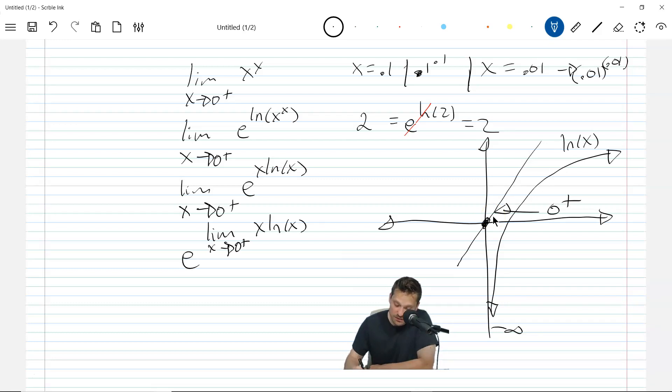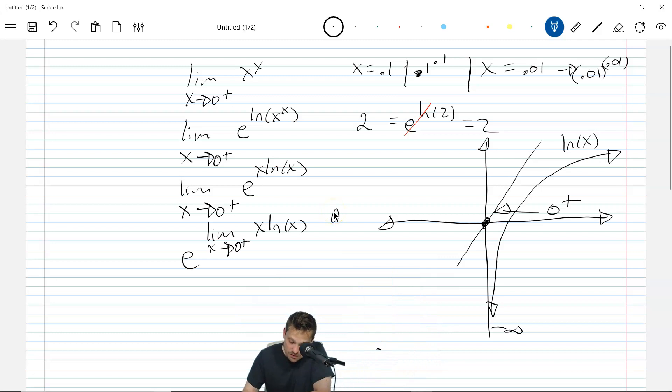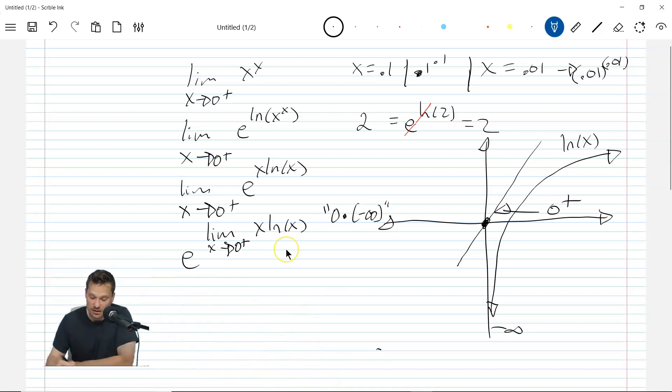So then you end up with something, roughly speaking, that looks like 0 times negative infinity. Now remember, you have to be really careful. It's not actually 0 times negative infinity. It's just what the x approaches and what the ln approaches. But usually we just express it in this compact form. So this is suggesting that we should use L'Hôpital. To use L'Hôpital, we first have to prepare as follows. I will say x ln of x is equivalent to ln of x over 1 over x. And the reason is that this is keep, change, flip. So in other words, you would keep the ln, change the division to multiplication, flip the 1 over x, which would give you x multiplying ln x.